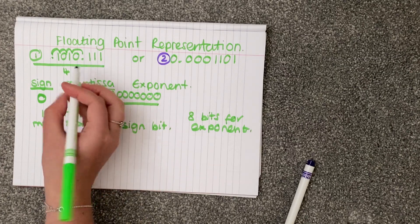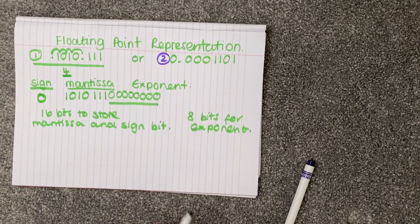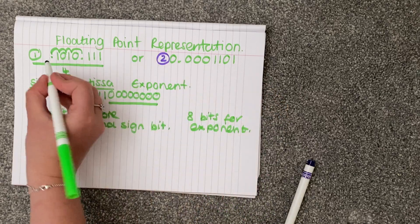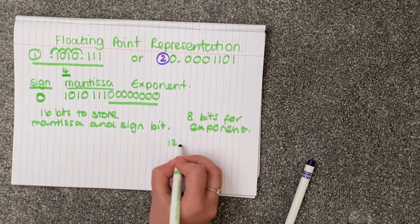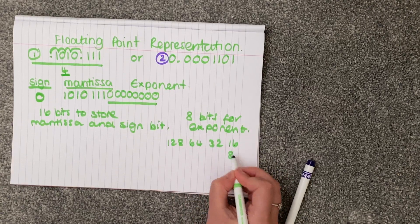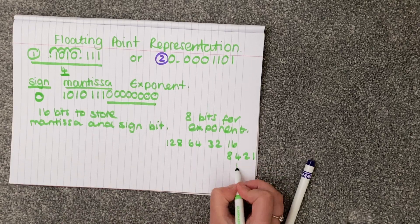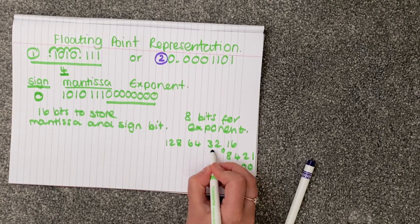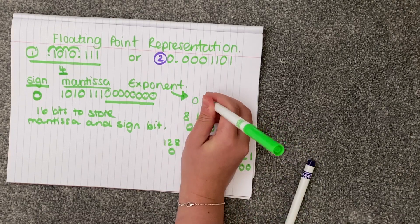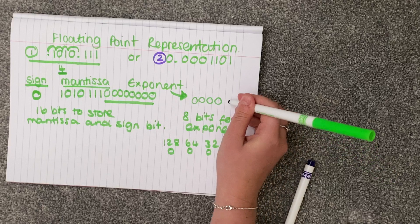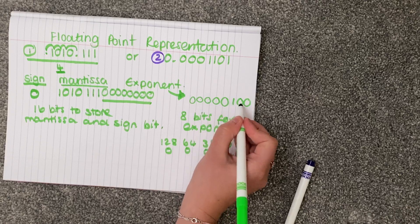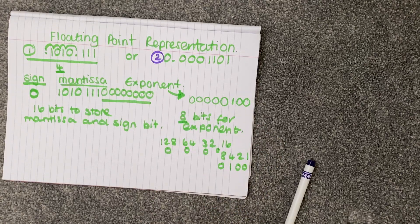What we then need to do is — we figured out that we moved four places — so we use our normal exponent. When we work out our normal binary numbers, because it's a positive number, we would have our 128, 64, 32, 16, 4, 2, 1. And we know it's 4, so it would be 00000100. So you would write out your exponent as 00000100 — counting all eight bits, because we had our 8 bits to store our exponent.